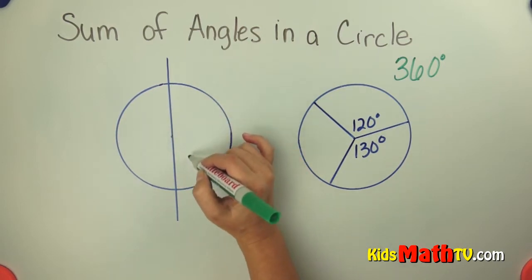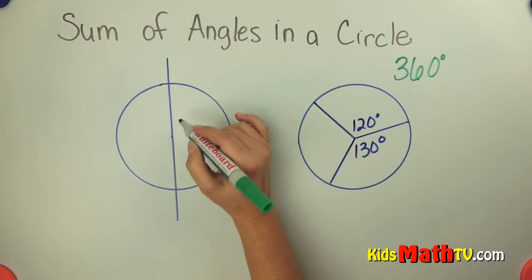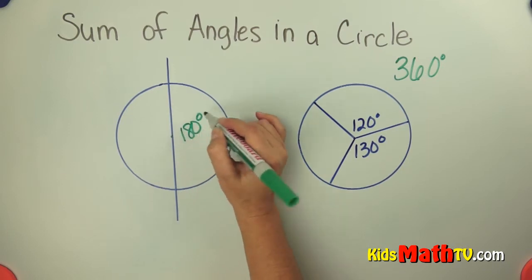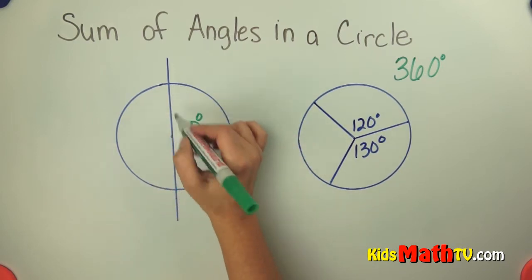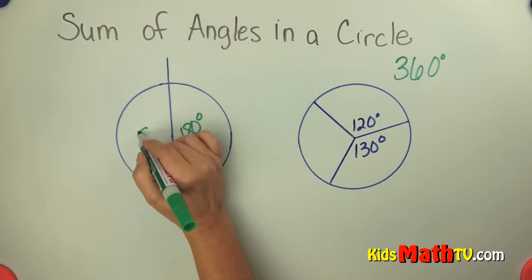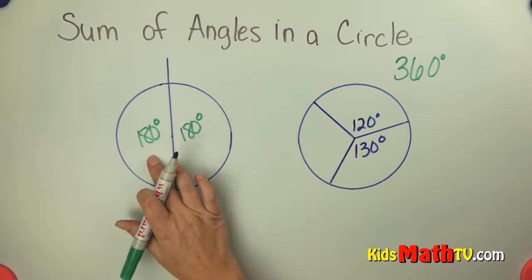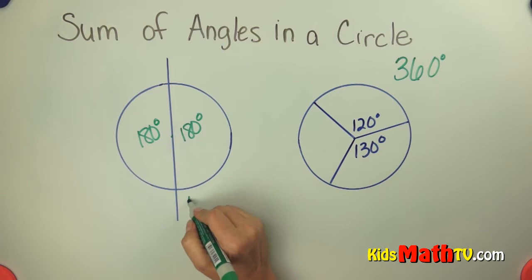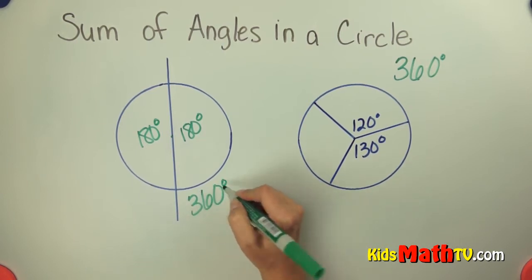This line we know is 180 degrees. So this side of the circle is 180 degrees. This side is a straight line also, which is also 180 degrees. 180 plus 180 is 360 degrees in a circle.